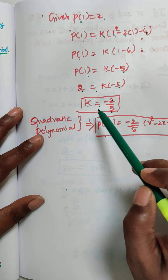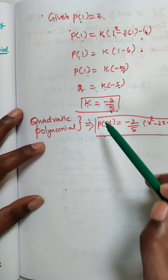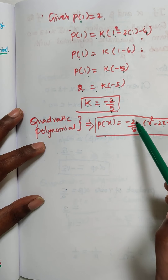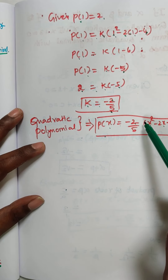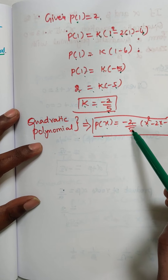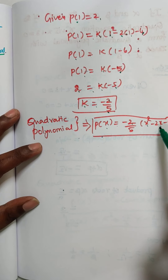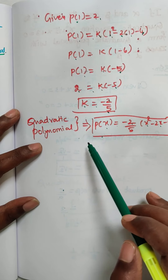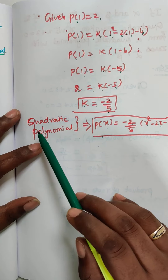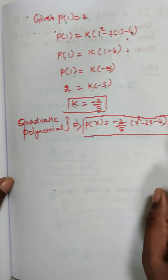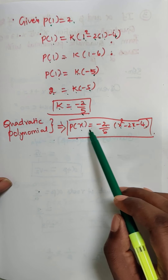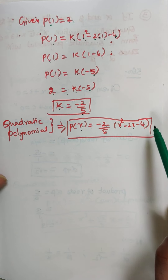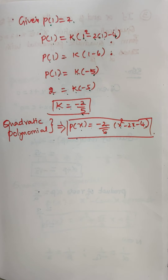Now substituting the k value into the quadratic polynomial: P of x is equal to k into x square minus 2x minus 4, where k equals minus 2 divided by 5. So the quadratic polynomial is P of x equals minus 2 by 5 into x square minus 2x minus 4. Thank you children.